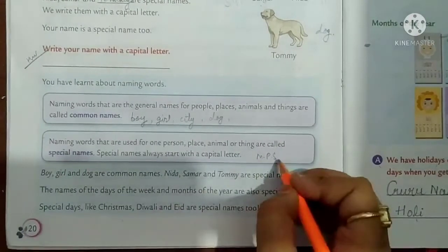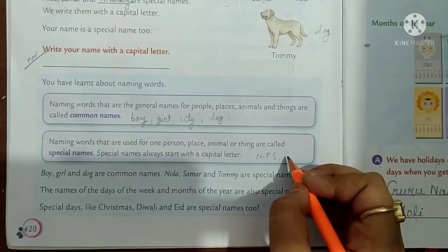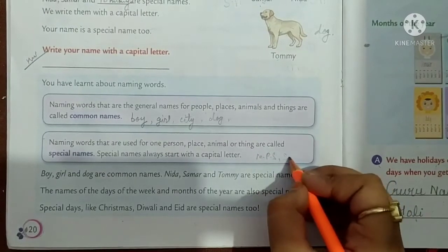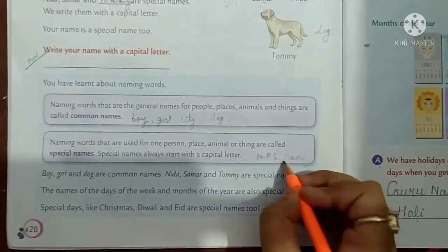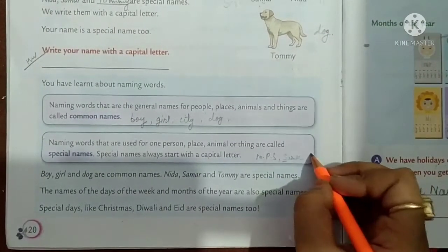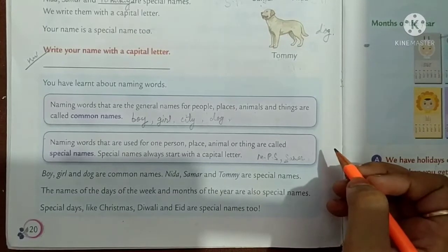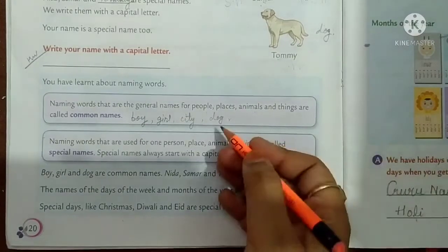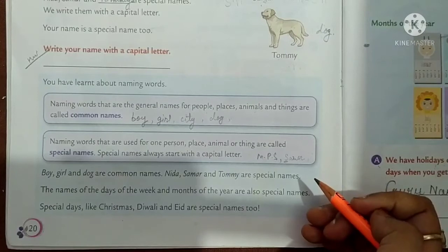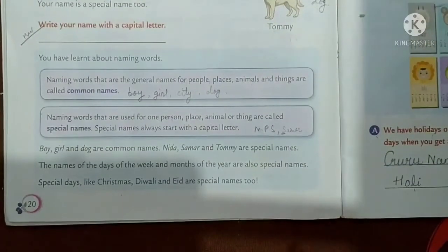MPS — Mangla Public School. Summer starts with a capital letter. Ayodhya is a city — city is a common name, but Ayodhya, Mumbai, Delhi are special names. Their first letter is always capital.